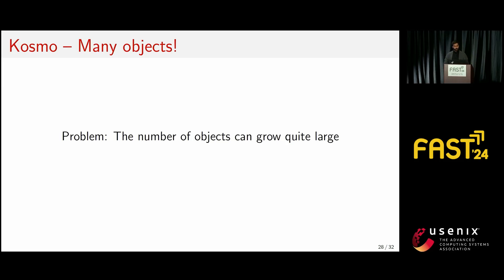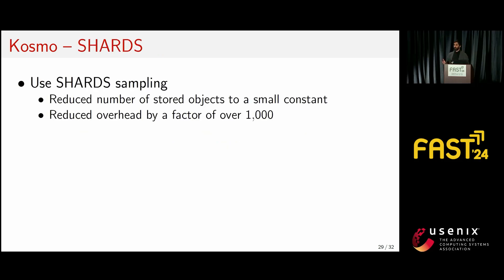Cosmo also needs a reference to all unique objects it has ever seen, and the number of unique objects can grow quite large. To solve this, we employ the same shard sampling method used by MiniSim to reduce the number of stored objects to a small configurable constant. We found this reduces overhead by a factor of over 1,000, covering both the memory overhead of storing objects and the compute overhead of regenerating stacks by iterating through all stored objects.